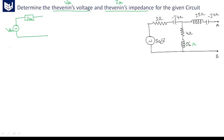Now we have to find Vth. Vth is equal to V into Z2 by Z1 plus Z2 — we have already discussed this in the previous video. Here Vth is the voltage appearing across the two terminals A and B. So what is the voltage appearing across these two terminals? Simply the voltage appearing across this 4 plus j6 ohms impedance. So if you consider this is Z2,